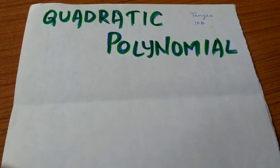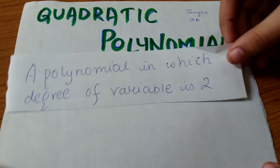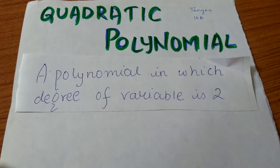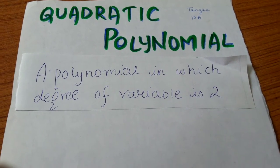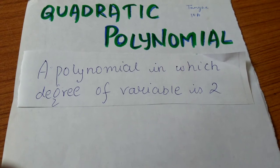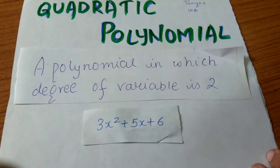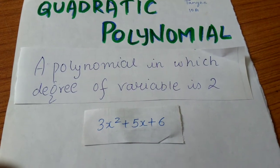What is a quadratic polynomial? A polynomial in which degree of variable is 2 is called a quadratic polynomial. Please share one example. 3x² + 5x + 6 is a quadratic polynomial.